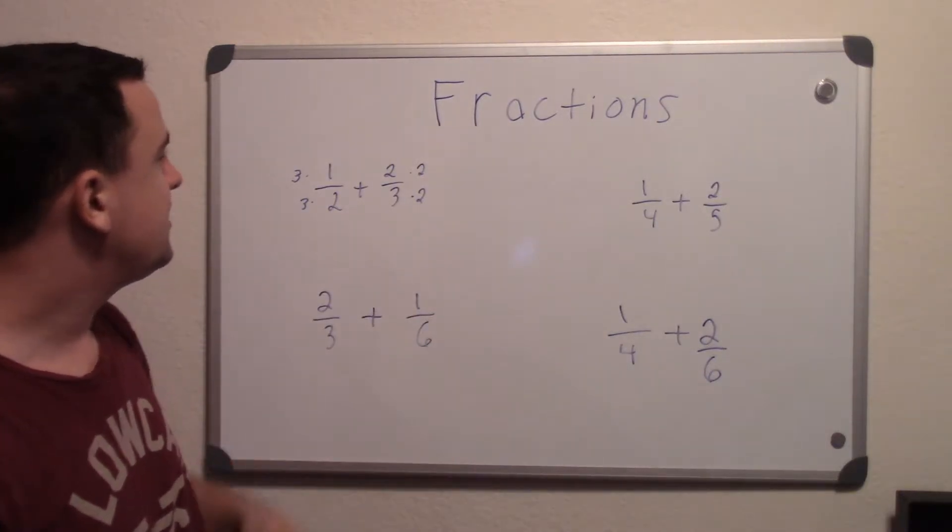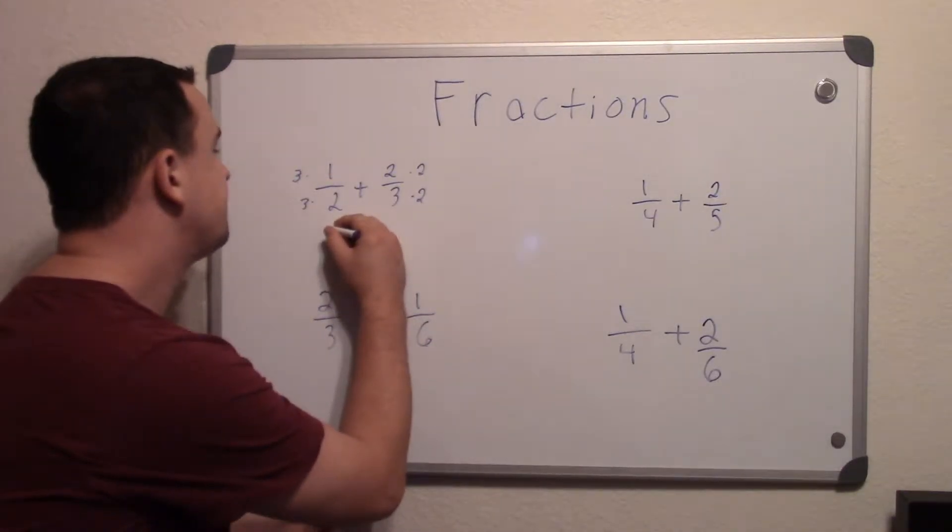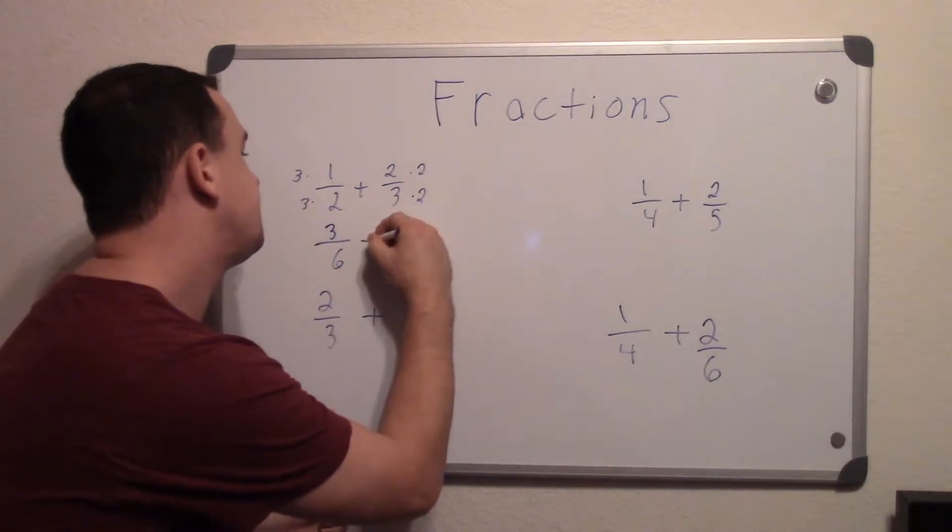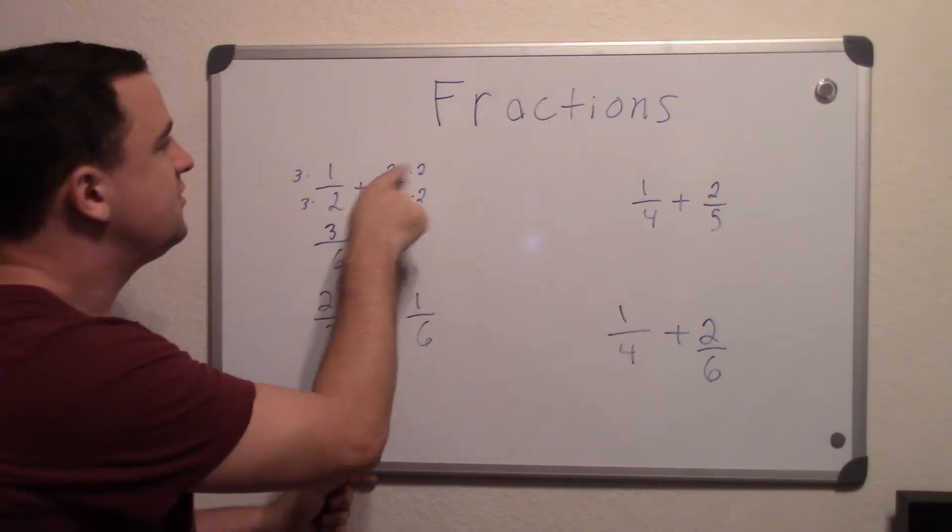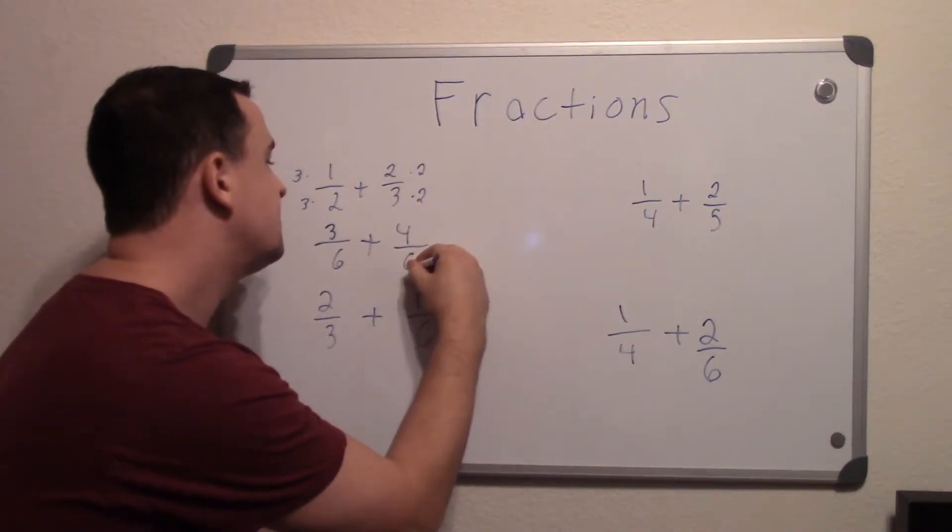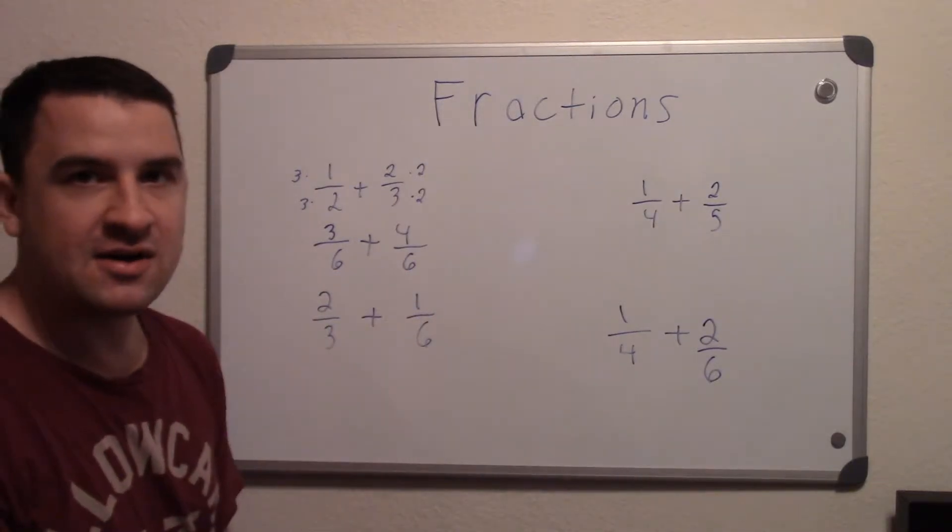So to show you what I mean, now this whole equation turns to 3 times 1 is 3, and then 3 times 2 is 6, and 2 times 2 is 4, and on the bottom 3 times 2 is 6.